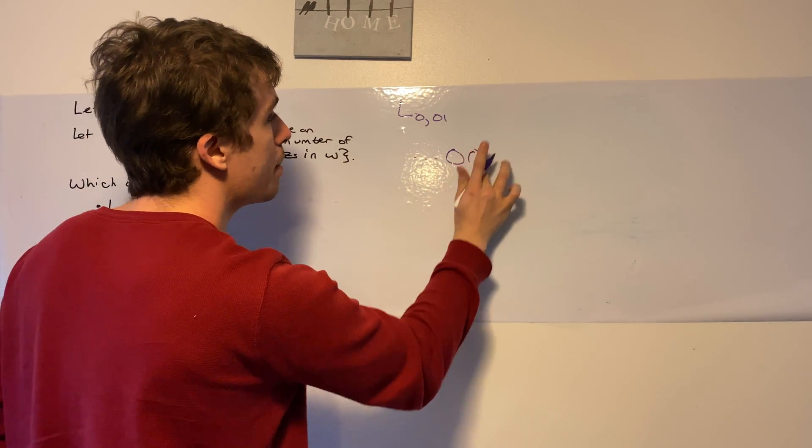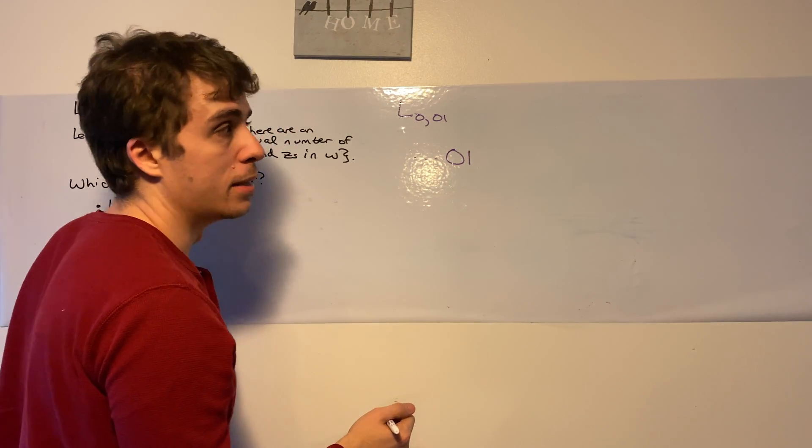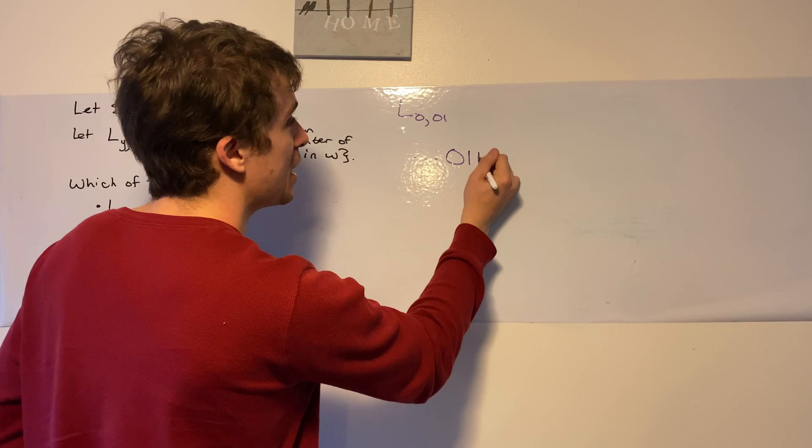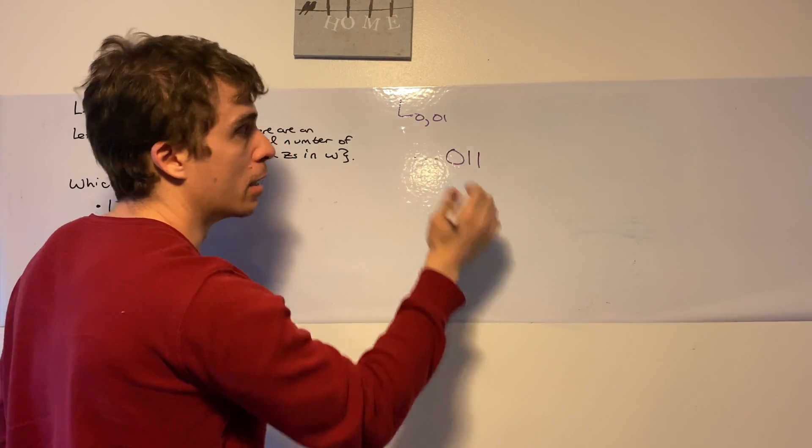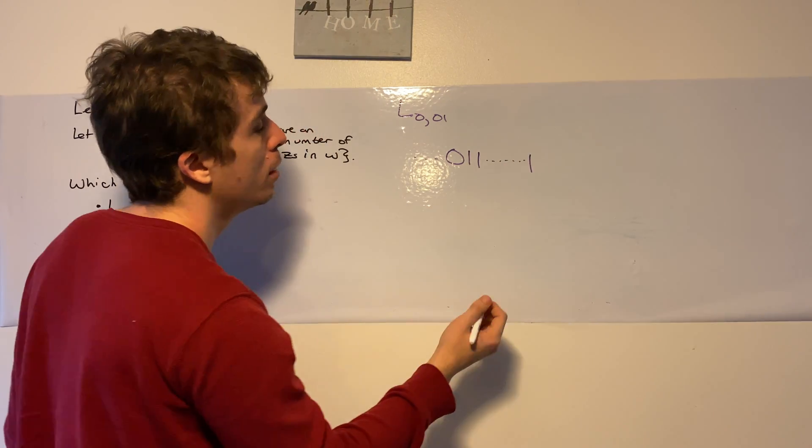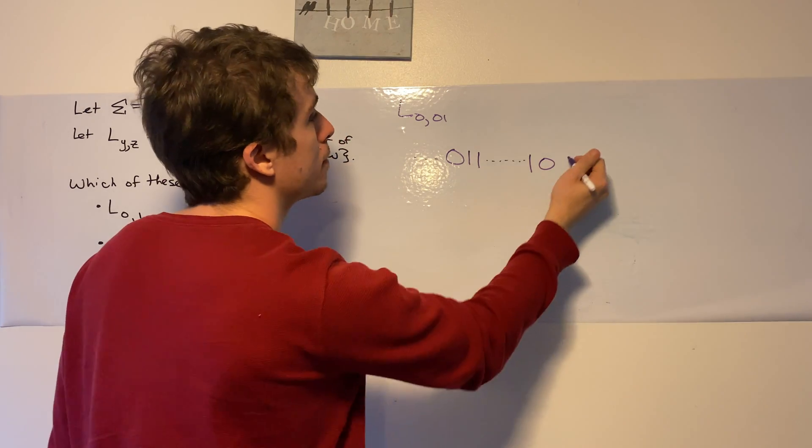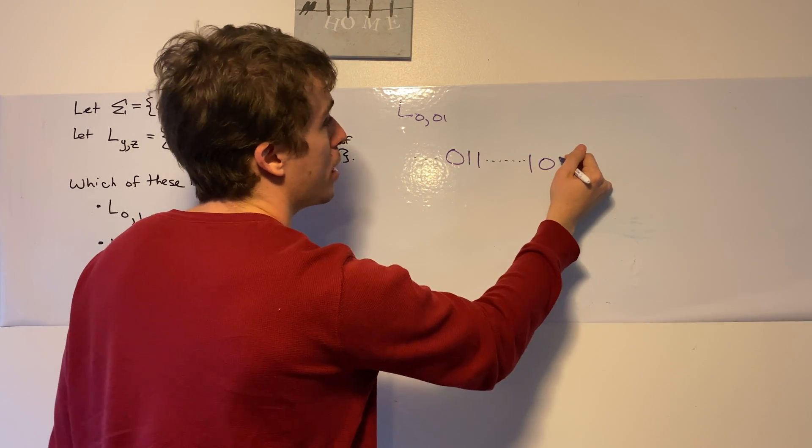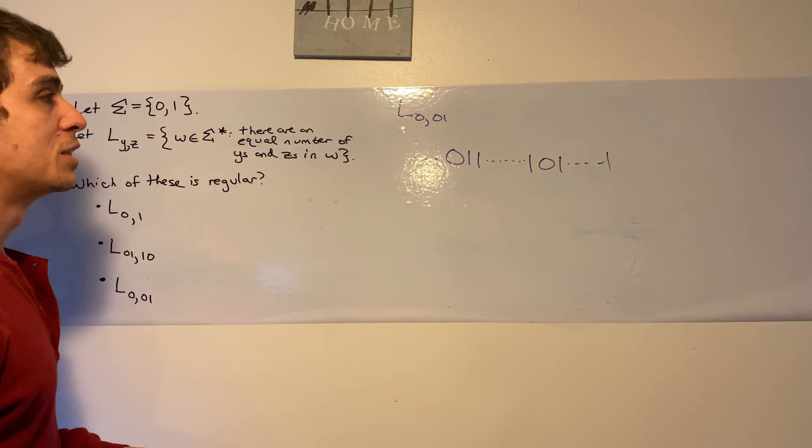So that means any time I see a 0, I must immediately see a 1 after it. But if I see another 1, that's okay because 1, 1 is not included here. So I can have a lot of 1's in a row. And then at some point later, I have another 0. And then at that point, I might have another 1.